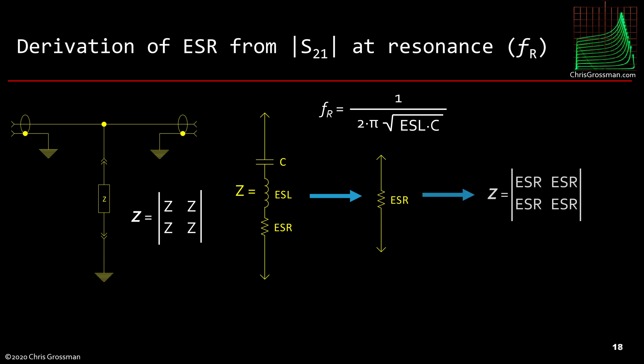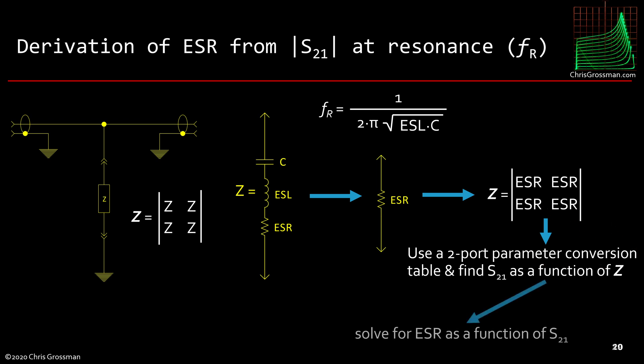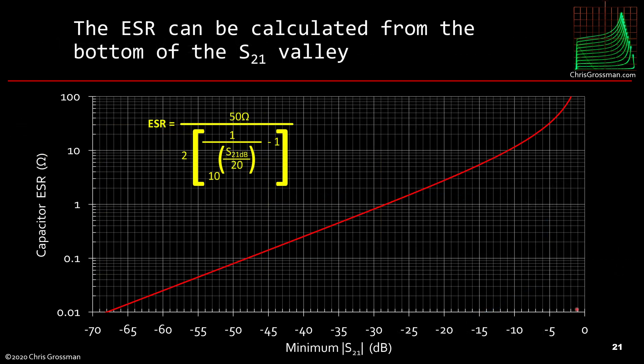And so if we take the Z-parameter matrix of that, that Z-parameter matrix then becomes ESR, which is now a real number, not a complex number for all four Z-parameters. So math is getting much easier, because now all the numbers are real and they're all the same. If we use a two-port parameter conversion table, we can find S21 as a function of the Z-parameters. And then we can solve for ESR as a function of S21. And this is the result.